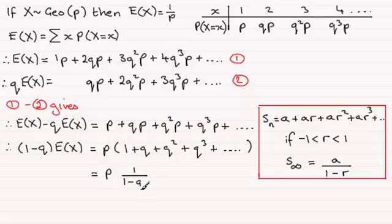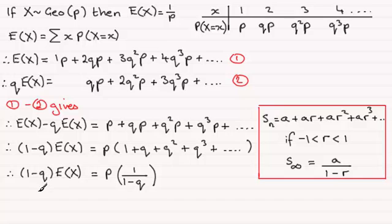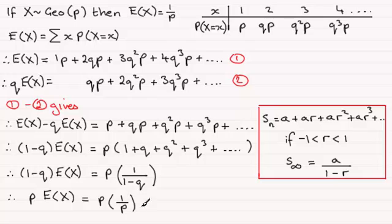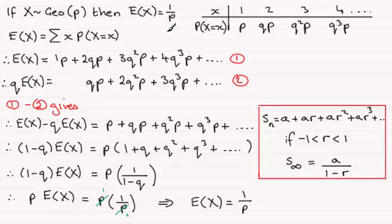So we have (1 - Q)·E(X) = P times 1 over (1 - Q). Now, 1 minus Q is P, since Q is the probability of failure. So we get P·E(X) = P times 1/P. The P's cancel, giving P·E(X) = 1. Dividing both sides by P, it follows that E(X) equals 1 divided by P — and that's what we had to show.